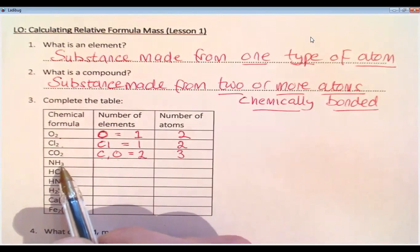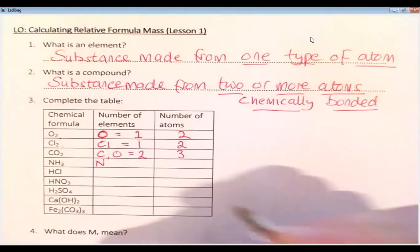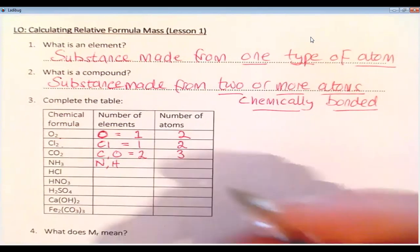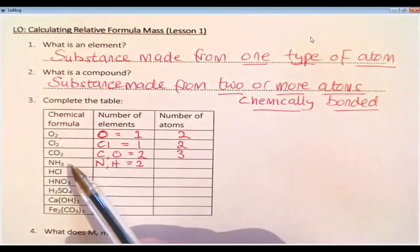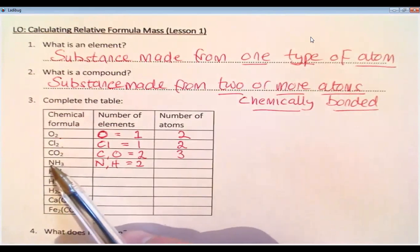Then we've got NH3, which is ammonia. That's made from N, which is nitrogen, and H, which is hydrogen. So that's two elements. And then if we count up the number of atoms, three hydrogens and one nitrogen. So three plus one is four.